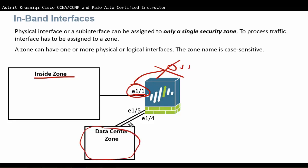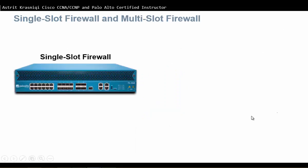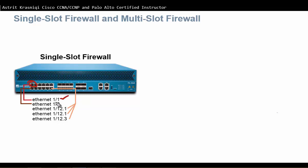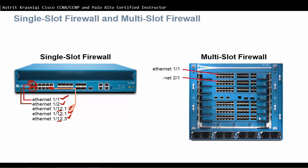A zone can have more than one interface. For example, Data Center Zone has interfaces E13 and E14. When you see a single-slot firewall, interfaces are marked with Ethernet 1 forward slash 1 for the first interface, Ethernet 1 forward slash 2 for the next, and so on. If you configure sub-interfaces, they are marked like Ethernet 1 forward slash 12.1, dot 2, dot 3, and so on. A multi-slot firewall uses Ethernet 1 forward slash 1 for the first slot, Ethernet 2 forward slash 1 for the second slot, Ethernet 3 forward slash 1 for the third, and so on.